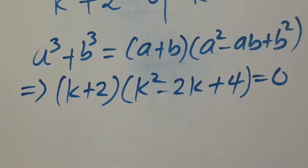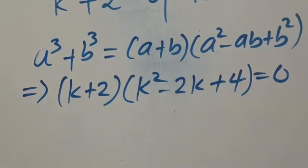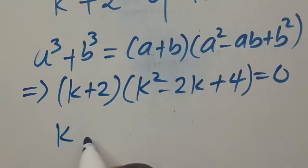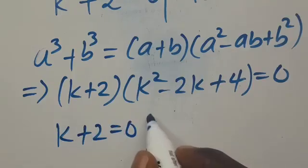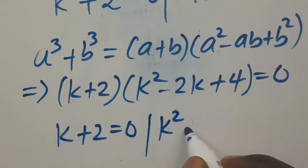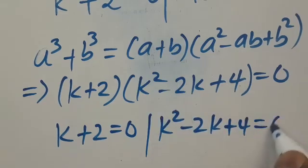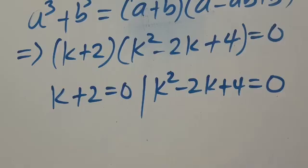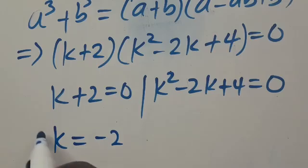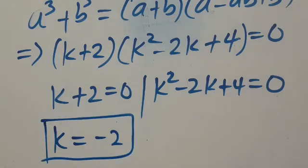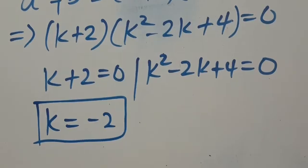What we are saying here is that for this particular expression to equal 0, it is either we have k plus 2 equals 0, or we have k squared minus 2k plus 4 equals 0. From the first one, we get k equals minus 2 as the first real solution.